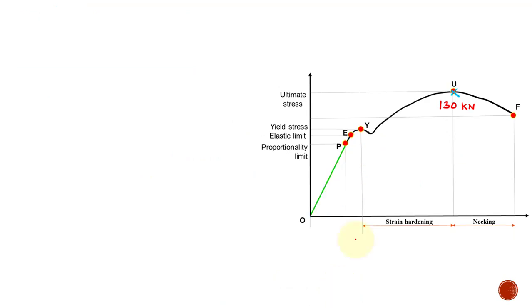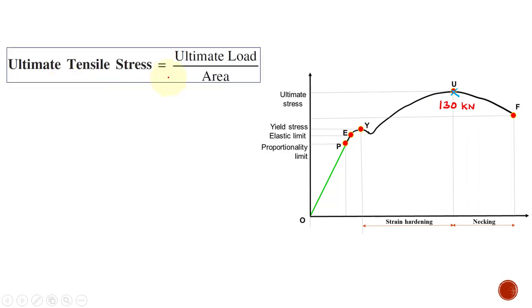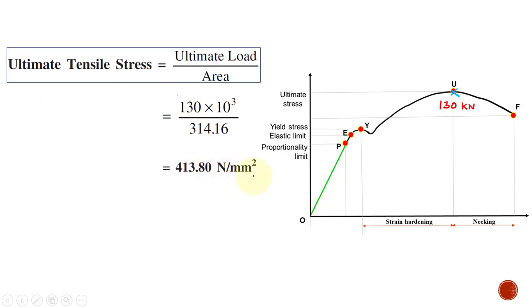Now we calculate the ultimate tensile stress. The maximum load is applied at the peak point of the stress-strain curve, which represents the ultimate stress. Ultimate tensile stress = ultimate load / cross-sectional area = 130 × 10³ / 314.16 = 413.80 N/mm².